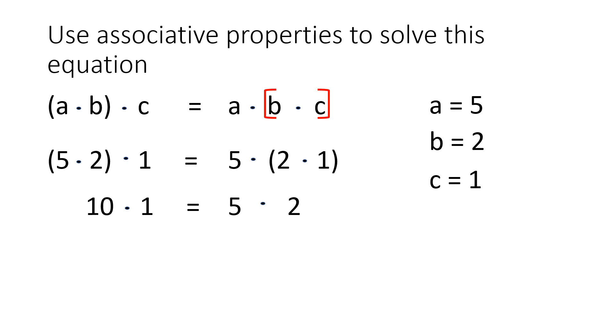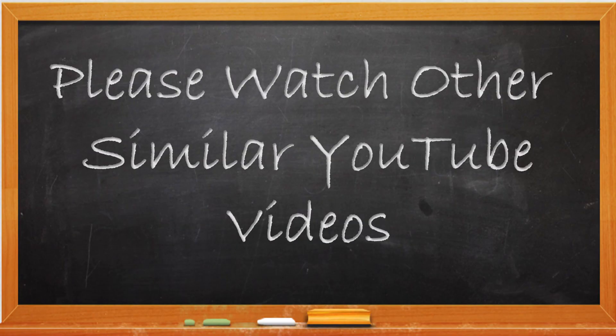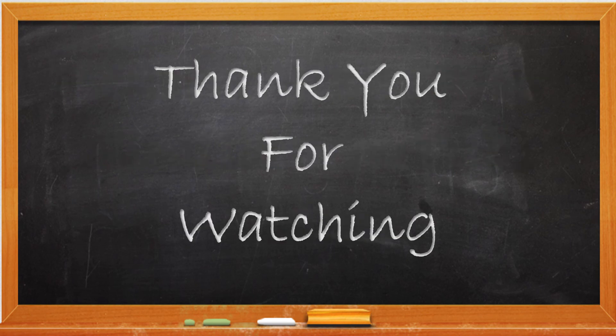And when we solve more, it will be 10 times 1 equals 10. 5 times 2 equals 10. This is how we use associative properties to solve even multiplication.